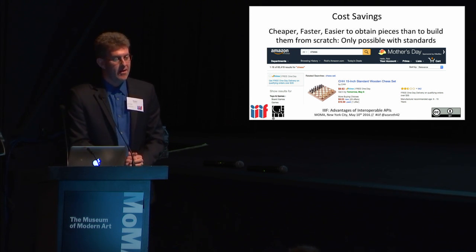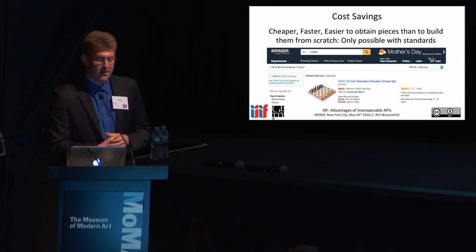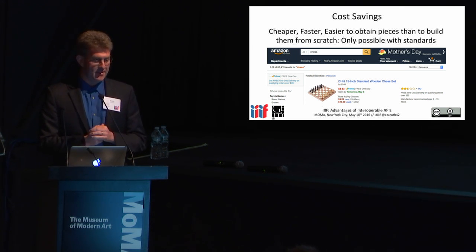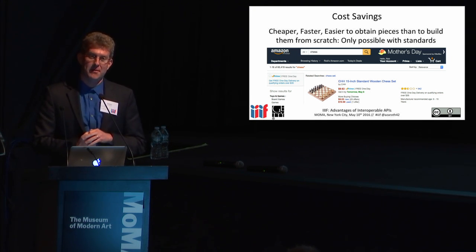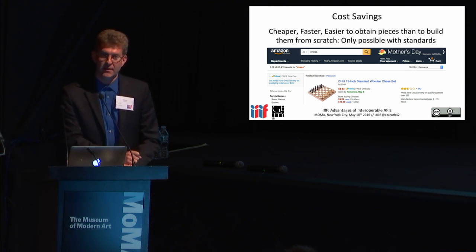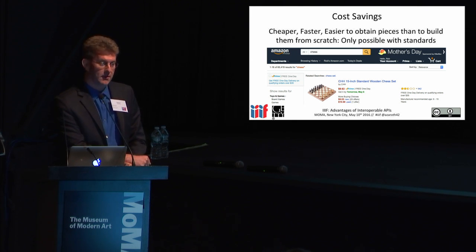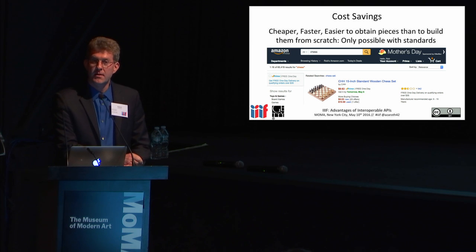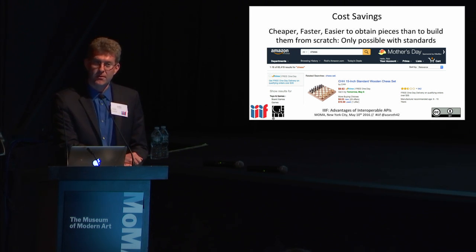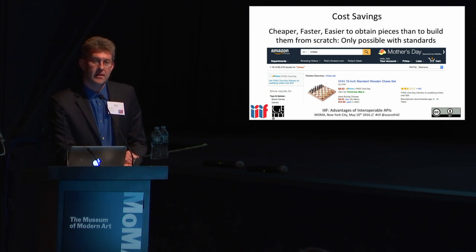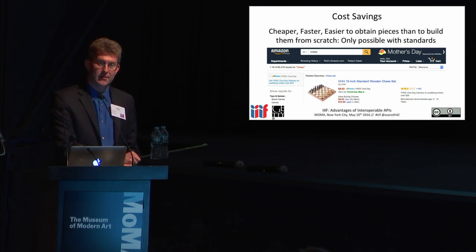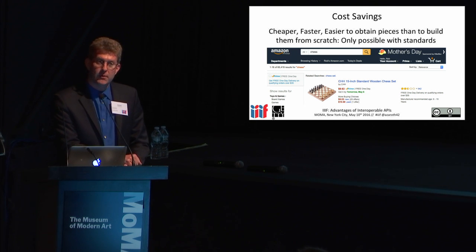On cost savings: I went to Amazon, searched for chess, and lo and behold, 65,419 results, of which the first one is a 15-inch standard wooden chess set for $9.63 that I could have had delivered to my house the following day. The only way that Amazon can do that is because chess is a standard set of rules. There are components common across all instances of chess, like the board and the pieces, and there are many vendors and institutions that make those pieces available.